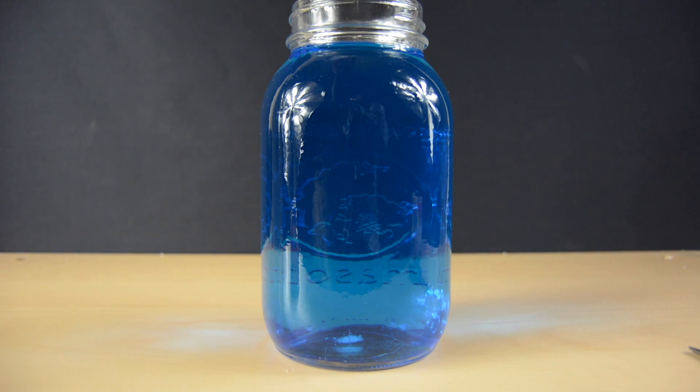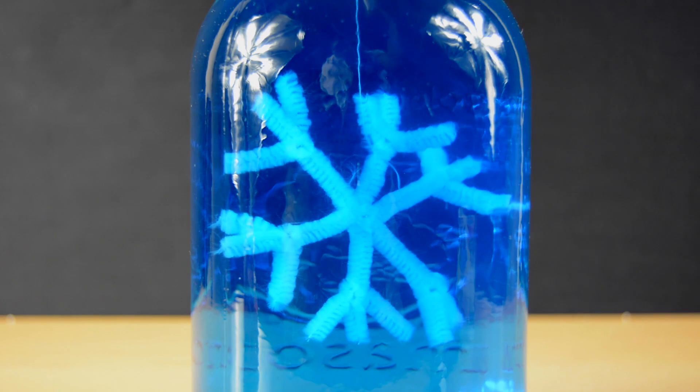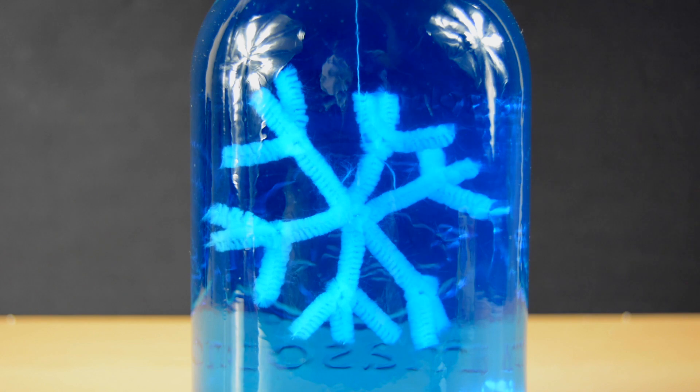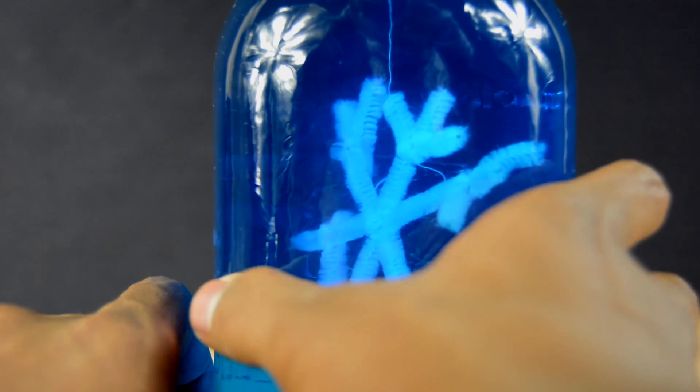Once you get your snowflake on your pencil, you have to go ahead and lower it into the solution and make sure that it fits really easily, just slides right through the opening of the jar. Make it so that the snowflake is hovering right in the middle of the jar and not touching the sides or the bottom. Finally, just set aside the jar overnight and let it work its magic.